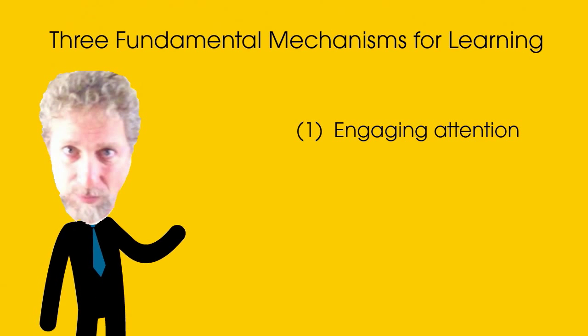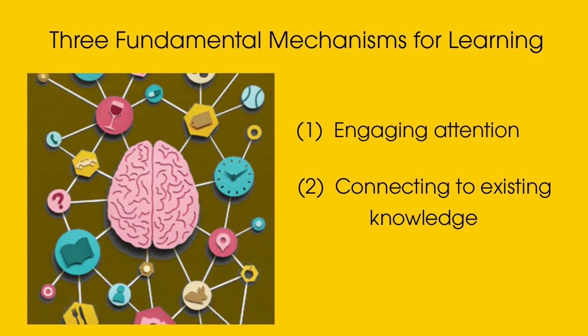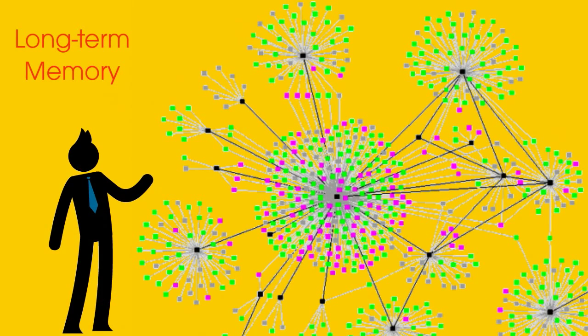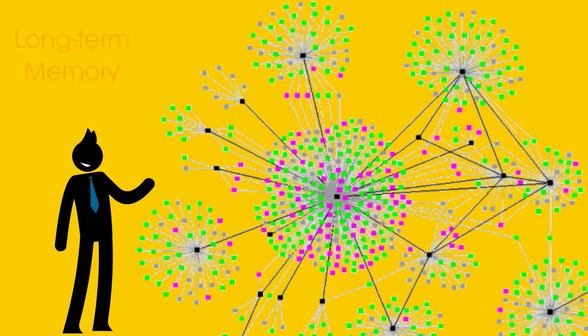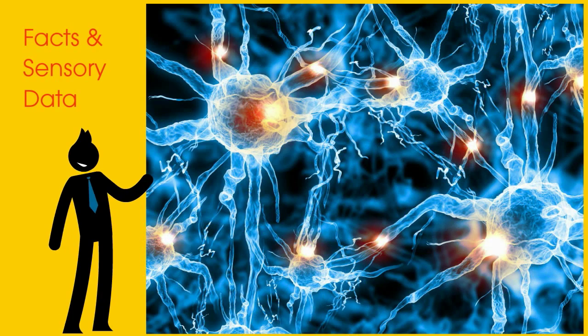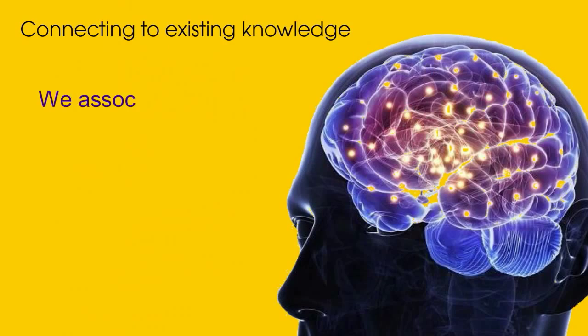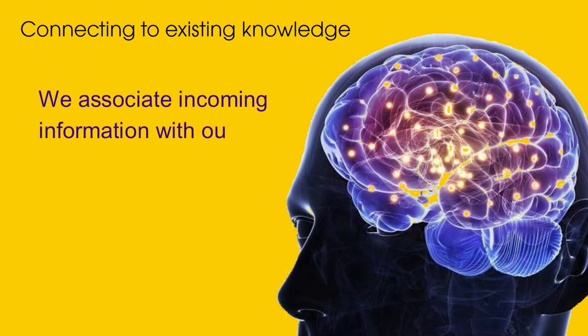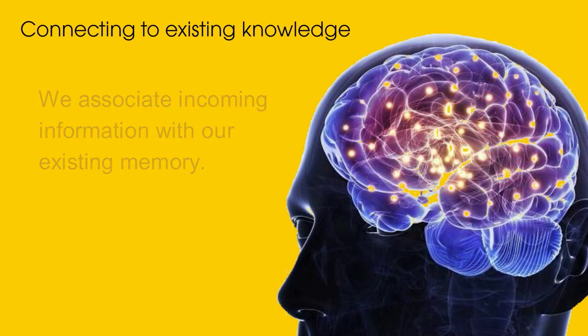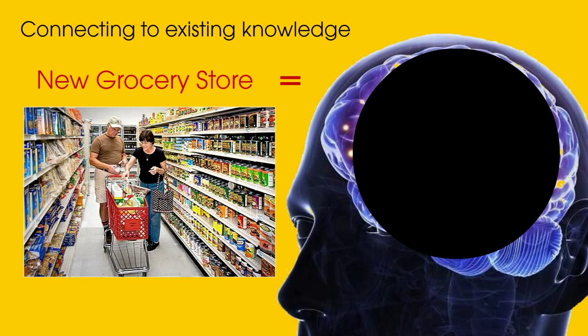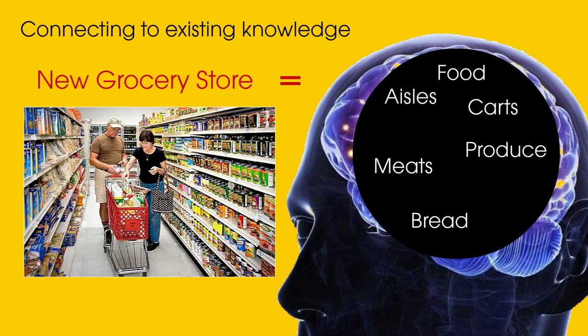Our next mechanism for teaching and learning is connecting new information with existing knowledge. Our long-term memory is like an interconnected network of tiny nodes, each containing facts and sensory data. It's our ability to associate incoming information with parts of our existing memory that enables us to make sense of the world as we encounter new places and situations.